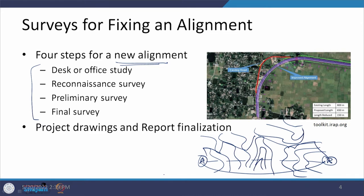Based on the ground information gathered, we may have fewer alternatives available, and more data is collected using various tools — resulting in the preliminary survey. Out of this preliminary survey, we finally arrive at one alignment to be used as the final alignment. Any data not collected in the previous three steps needs to be done, and the result is the project drawings and the detailed project report.